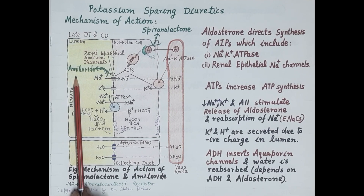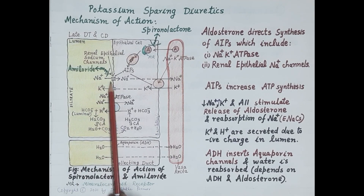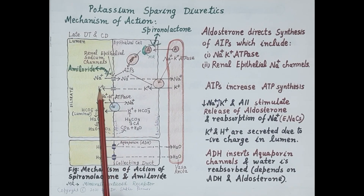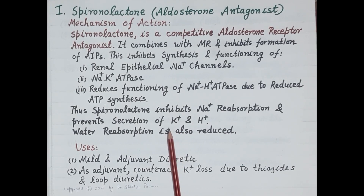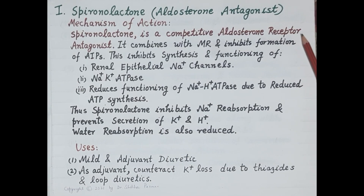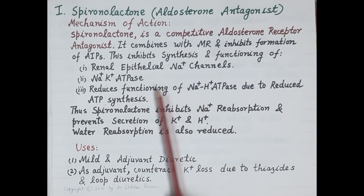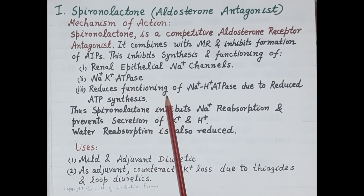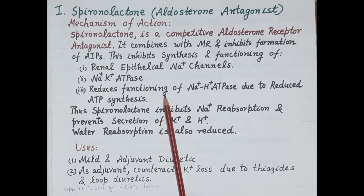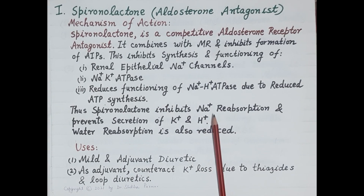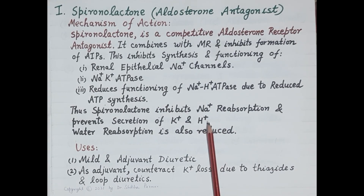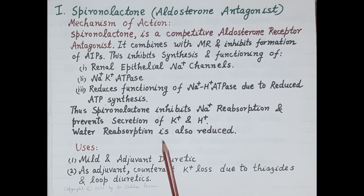The second class of potassium sparing diuretics — inhibitors of renal epithelial sodium channels such as amiloride — directly blocks these sodium channels, inhibiting reabsorption of sodium and thereby inhibiting secretion or excretion of potassium in the urine. In summary, spironolactone is a competitive aldosterone receptor antagonist that combines with mineralocorticoid receptors, inhibits formation of aldosterone-induced proteins, inhibits synthesis and functioning of renal epithelial sodium channels and sodium-potassium ATPase, reduces sodium-hydrogen ATPase functioning, inhibits sodium reabsorption, prevents secretion of potassium and hydrogen, and reduces water reabsorption.